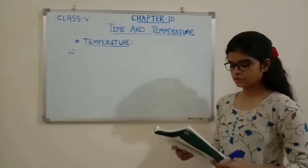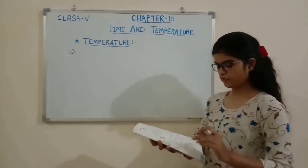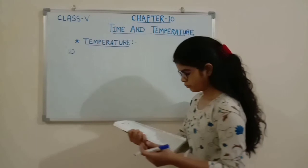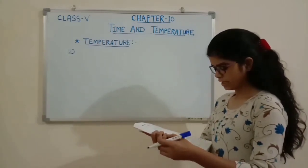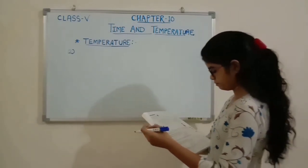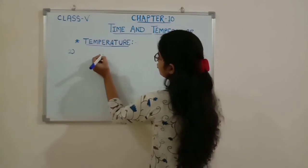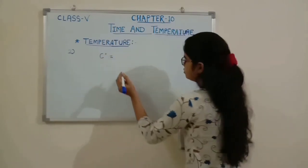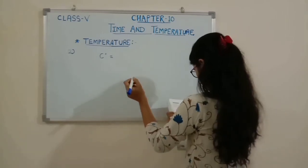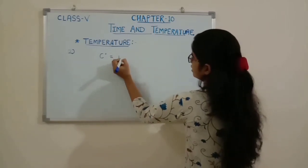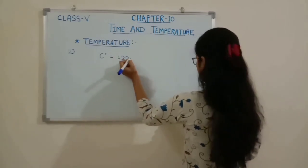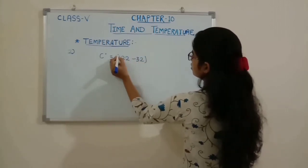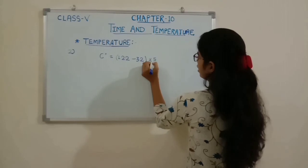In the next question, we have to convert from Fahrenheit to Celsius. We need to convert 122 degrees Fahrenheit into Celsius scale. The formula is: degree Celsius = (degree Fahrenheit − 32) × 5/9. So: (122 − 32) × 5/9.